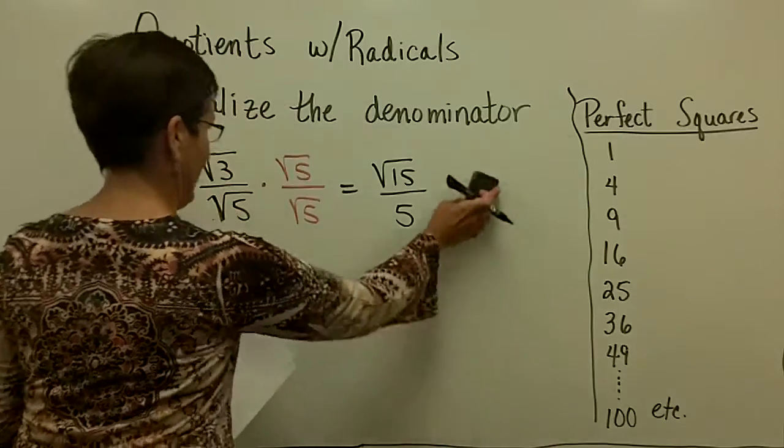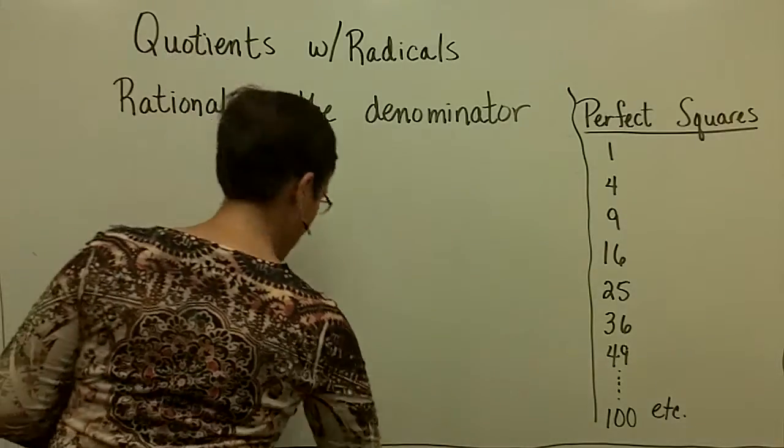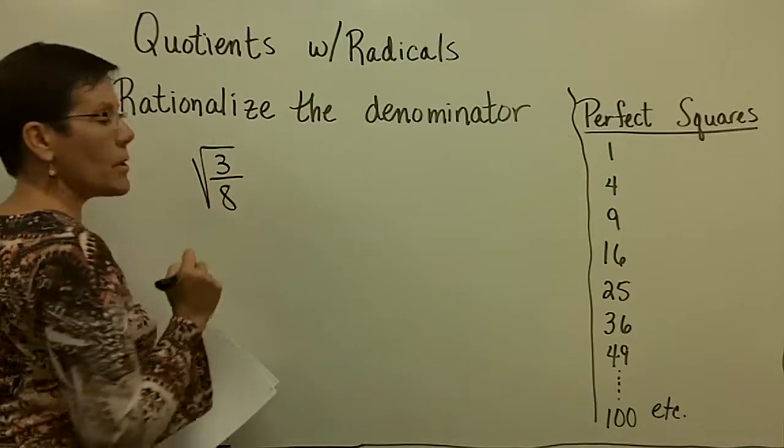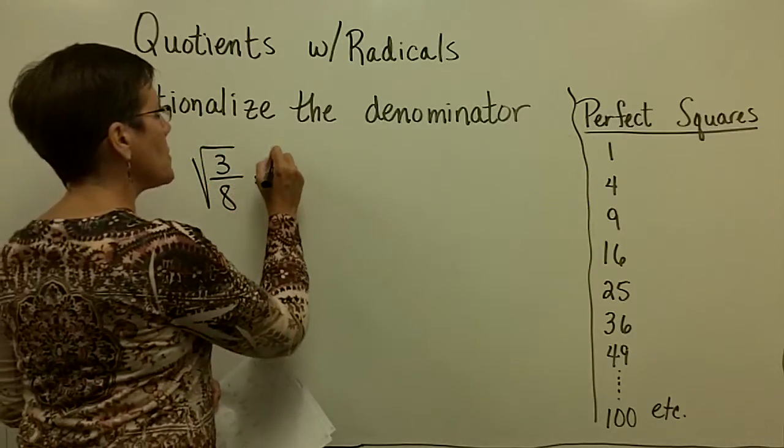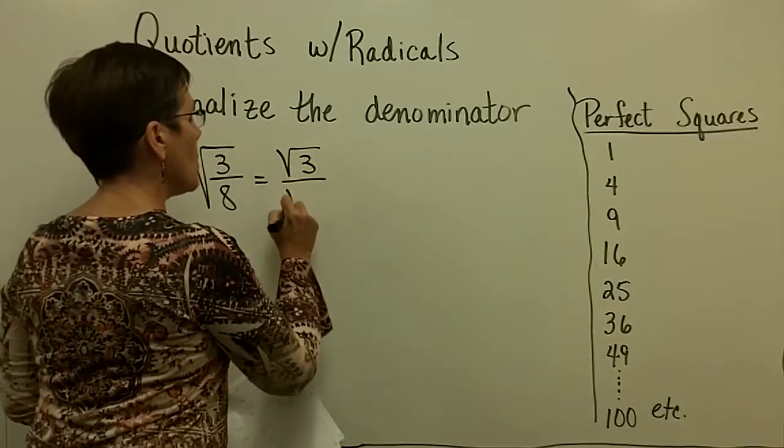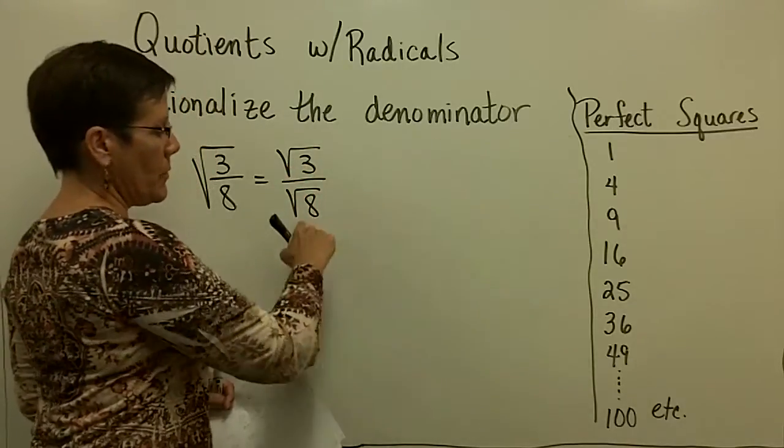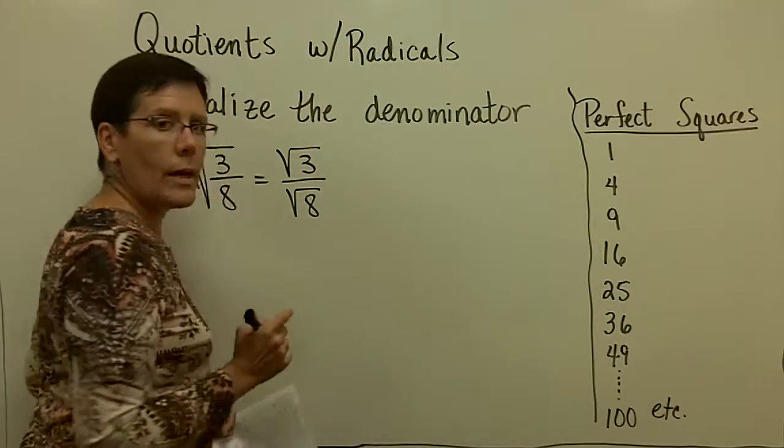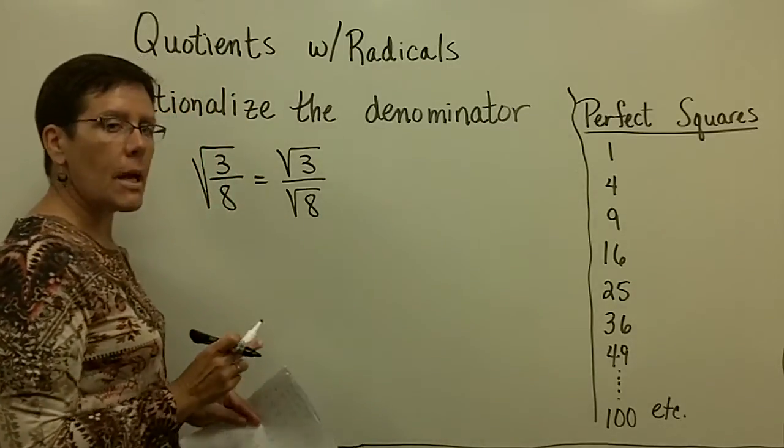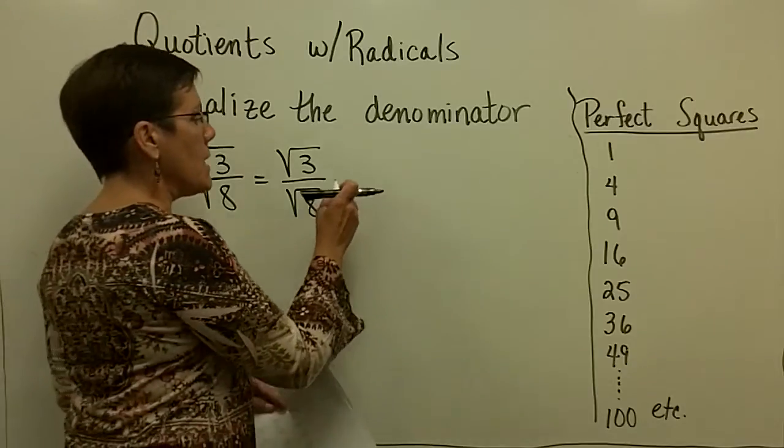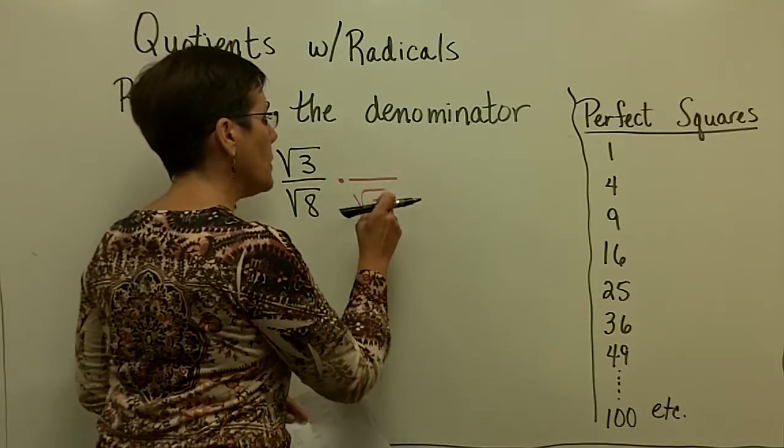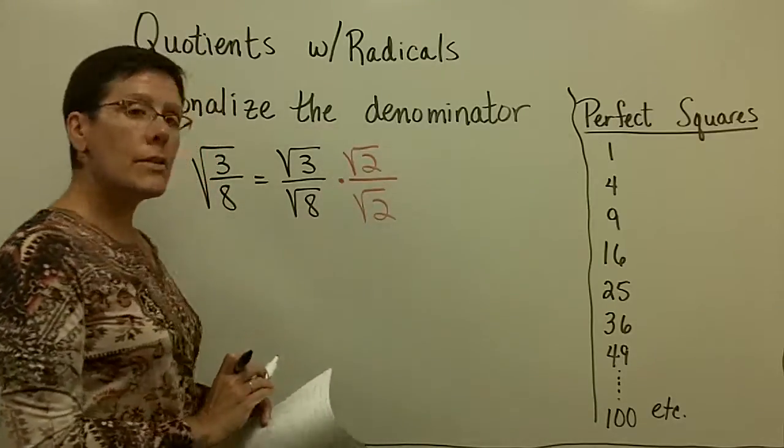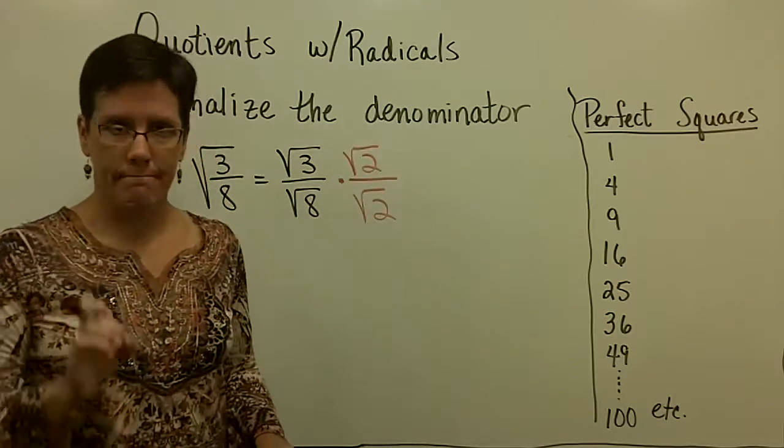Now, when I go and put an eight in this denominator, so no longer a prime number, your options are twofold. One is to think of a number that you can multiply eight by to get a number in that list right there. In this case, if I could just multiply eight by two, it would become a 16. And the square root of 16 is four. So that's one approach.